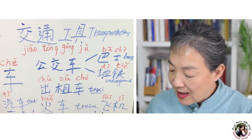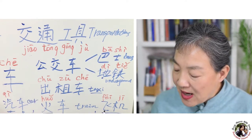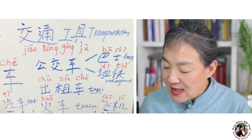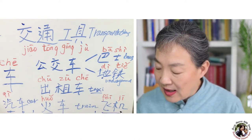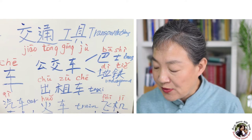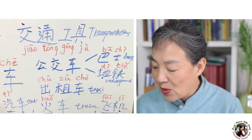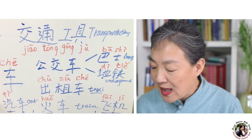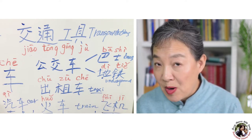汽车 means car. And lastly, 飞机 — 飞 means fly, 机 is a general word for machine or engine, so 飞机 is 'flying machine,' meaning airplane.